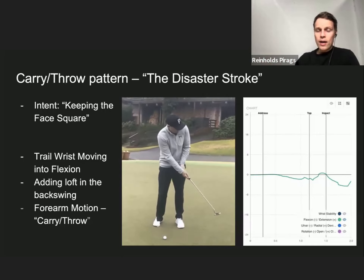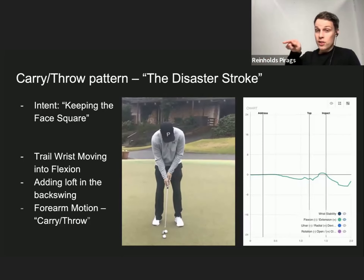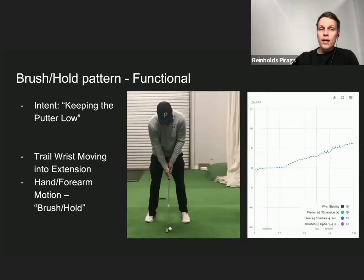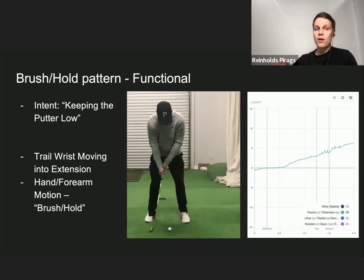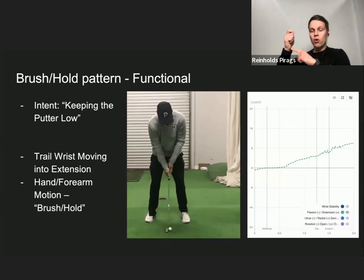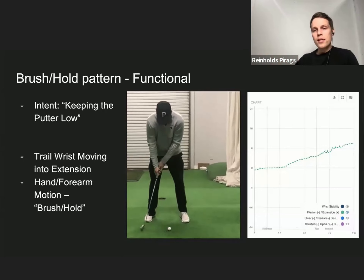You can clearly see this in the video and data: the flexion of the trail wrist is increasing — going downwards — a very bad, non-functional pattern. The opposite, functional approach is where the player keeps the putter low and the trail wrist moves into extension — a brush and hold pattern. In the graph, instead of moving down, the line moves up, showing the trail wrist extending.